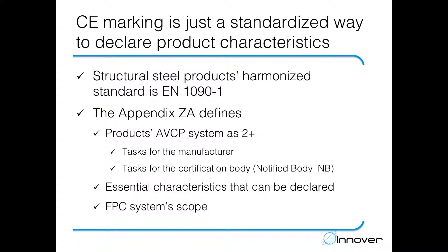In the last section, we looked at what CE marking of structural steel products means in plain English, and then we took a more detailed look at the manufacturing characteristics — the characteristics that are based on the actual manufacturing process.